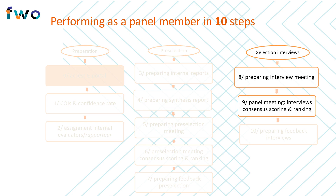During step 9, the panel convenes in Brussels and interviews the candidates. The panel issues a new score for the criterion candidate and can also adjust the project score when duly motivated. A final selection of candidates who receive the fellowship is then made. After the interview meeting, each candidate receives feedback from the FWO. In step 10, the rapporteur should amend the feedback with findings from the interview, and this feedback should be submitted one week after the interview meeting via the ePortal. This concludes the evaluation of the postdoctoral fellows.